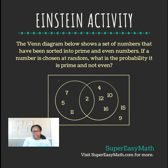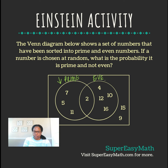The side that is prime is the side on the left — I'm going to write prime up here. 7 cannot be broken down; you can't divide 2 into it evenly, you can't divide 3 into it evenly. Same with 5 and 11 — you can't break those down. The even numbers are the numbers on the right. You have to be able to identify those to answer the question.